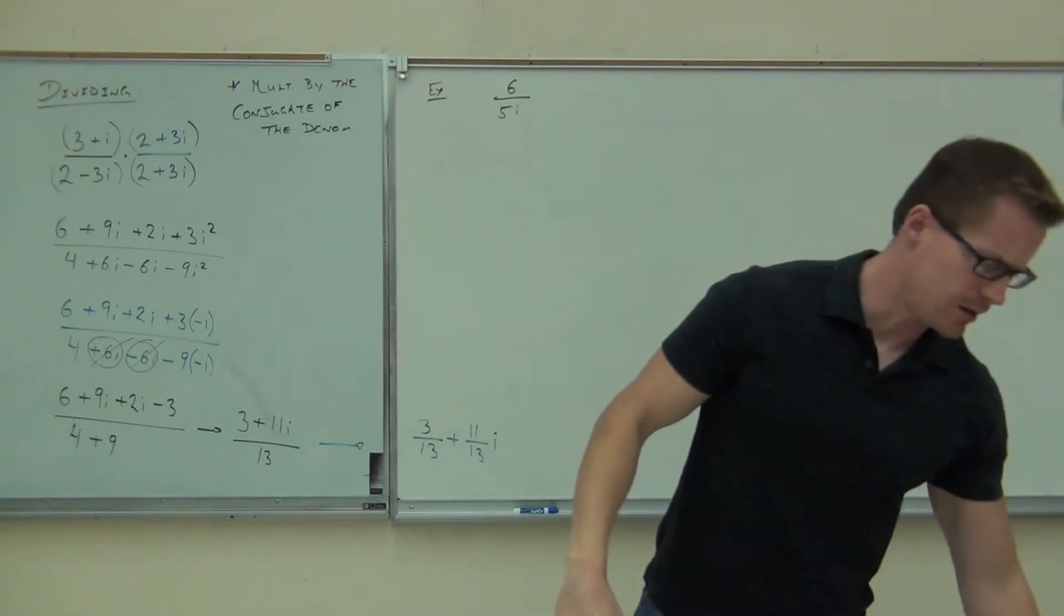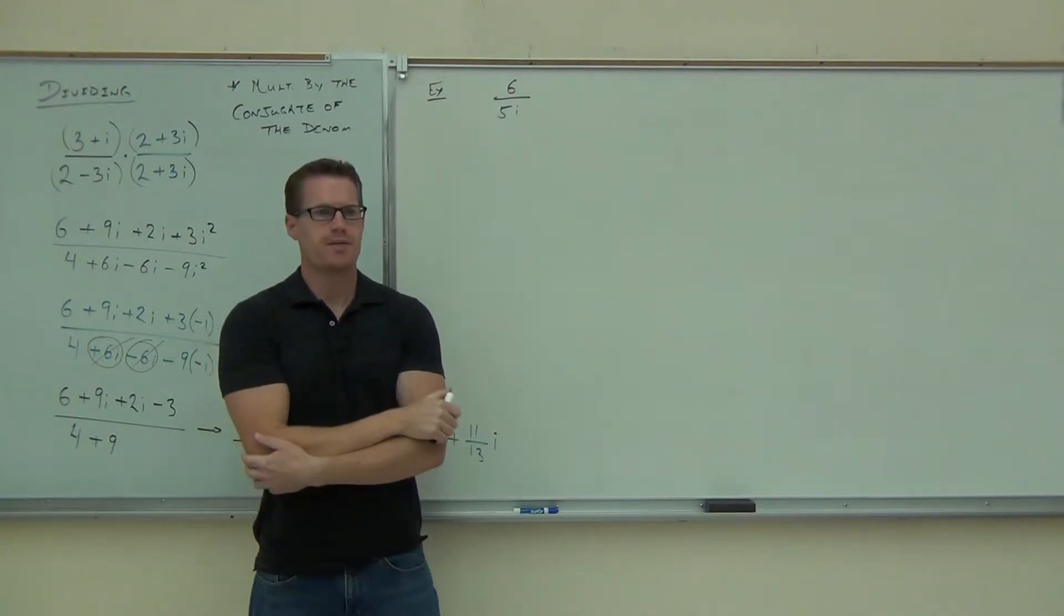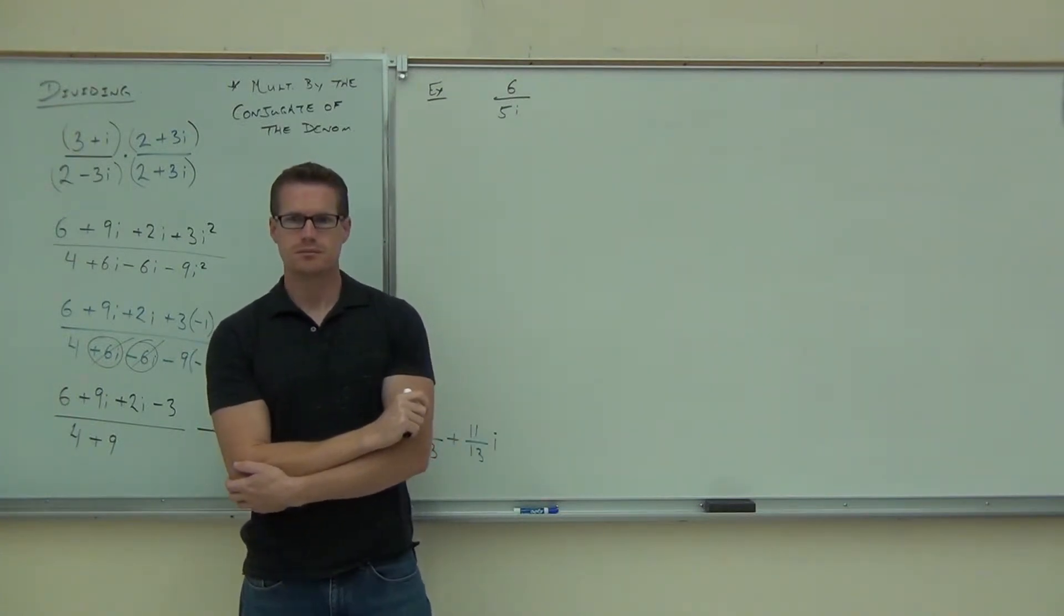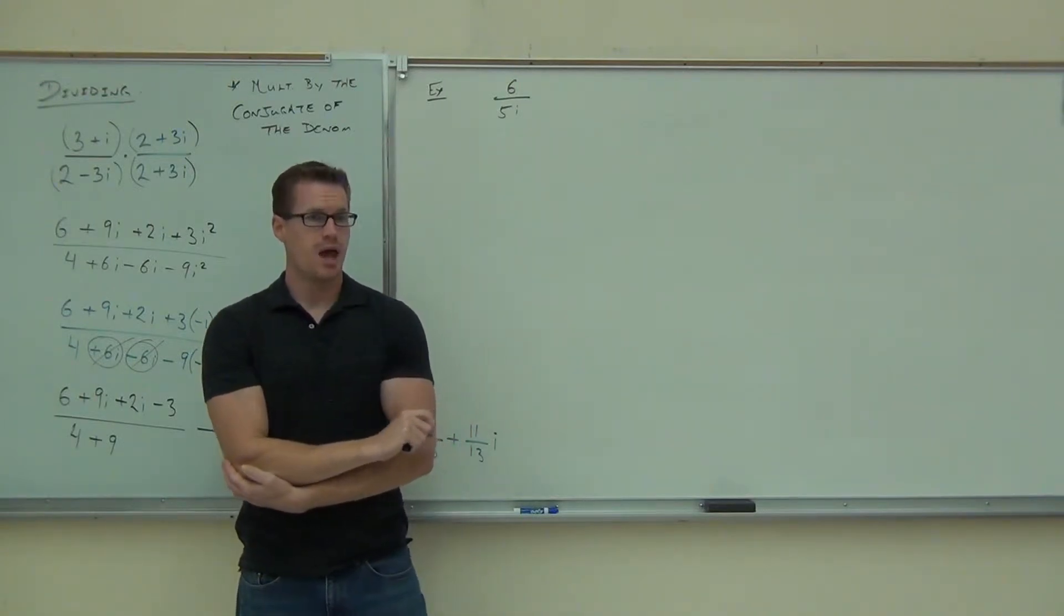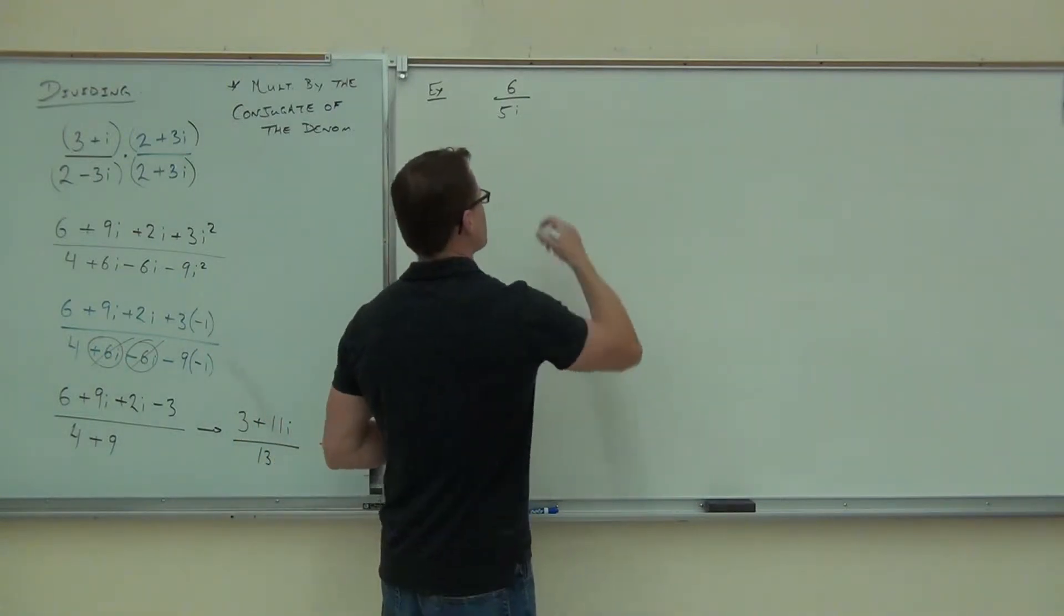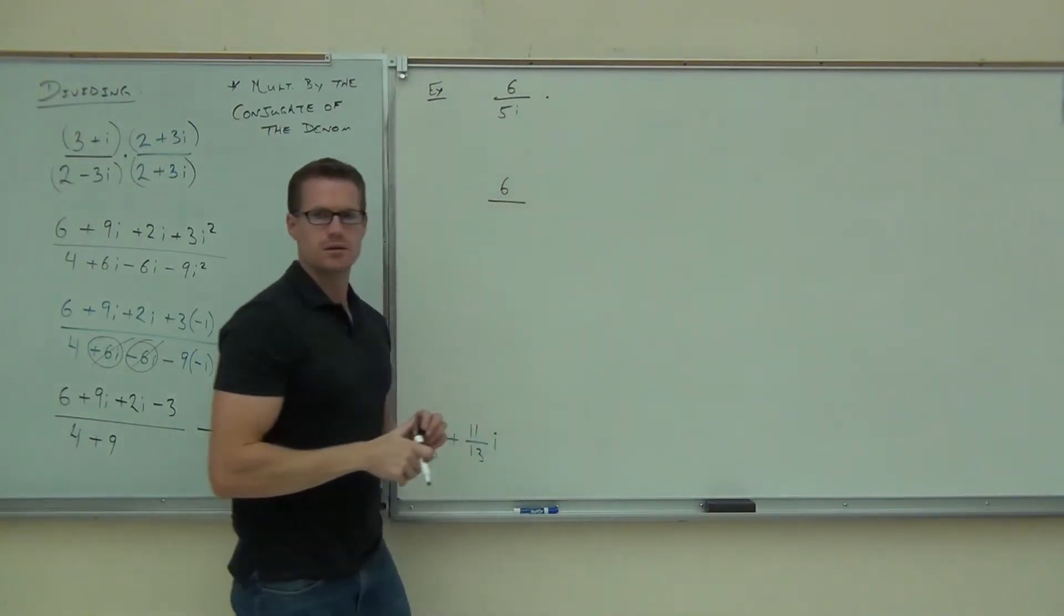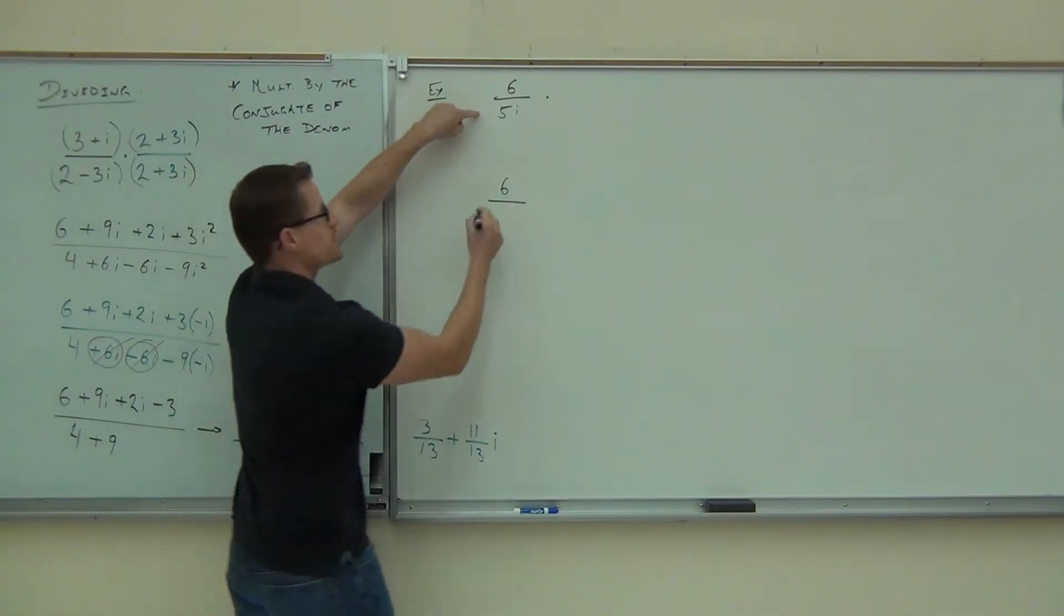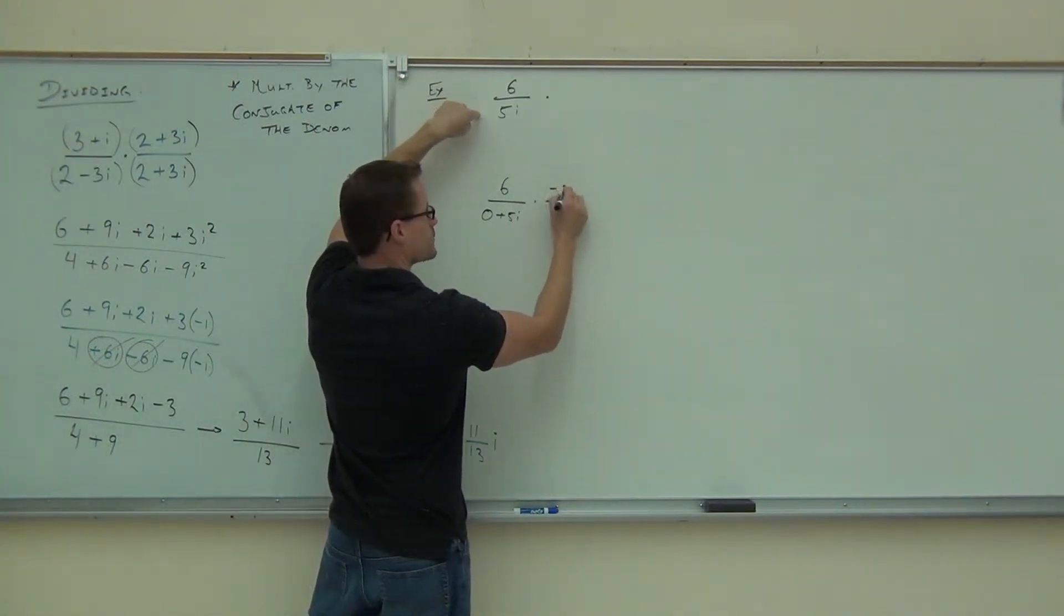How about 6 over 5i? Now, we know in order to divide complex numbers, we're supposed to find the conjugate somehow, right? Here we have a real number, or a complex number, the 0i on the numerator. And we have a complex number, or imaginary number, 0 plus 5i on the denominator. Can you think of what the conjugate will be for this thing? Why negative 5i? It's the opposite. So this really is like 0 plus 5i. You follow?